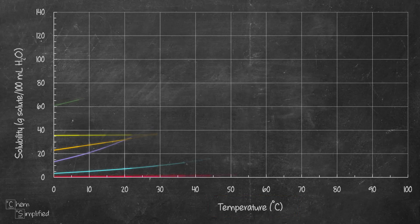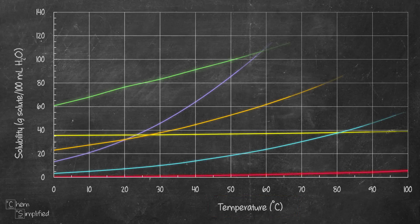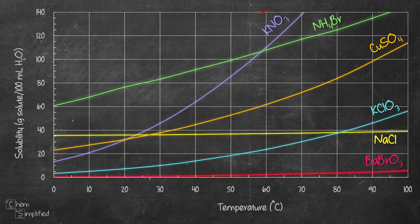Here are the solubility curves for some substances: potassium nitrate, ammonium bromide, copper sulfate, potassium chloride, sodium chloride, and barium bromide.